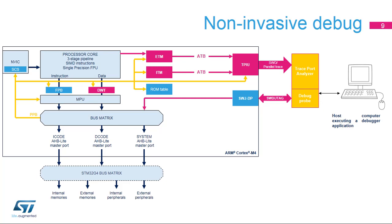The trace port analyzer is generally contained in the same device as the debug probe. Two interfaces are supported to transfer trace packets to the TPA: either the asynchronous single-wire output, or SWO, or the synchronous parallel trace port. An overflow condition occurs when a contention is detected in the TPIU, meaning that the bandwidth of the trace port is not large enough to export all trace packets.